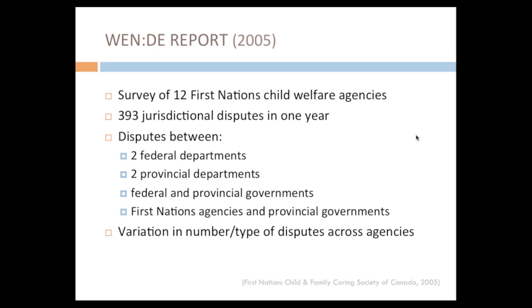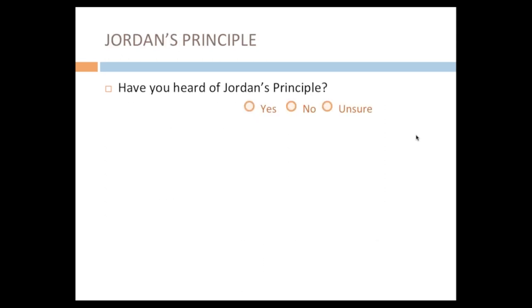Each of these were situations in which there was a family and a child in need of services — like Jordan was — and instead of focusing on how to get services to that child in a timely fashion, people were caught up in figuring out who should pay. These were time-consuming, resource-consuming, and often very tragic situations for the families and children involved.